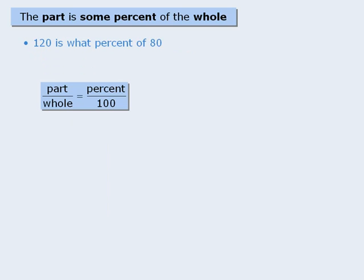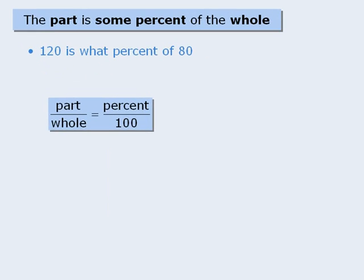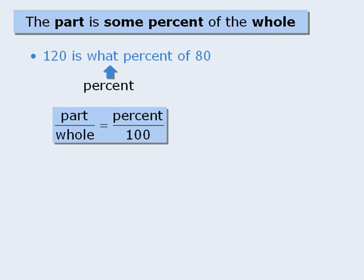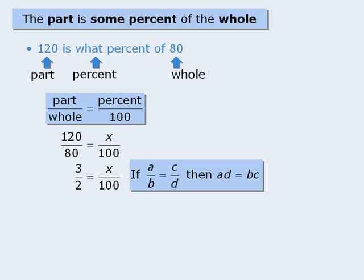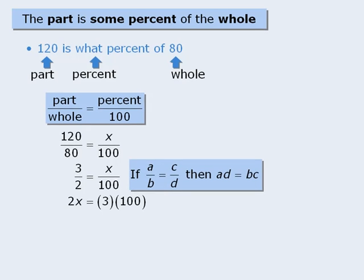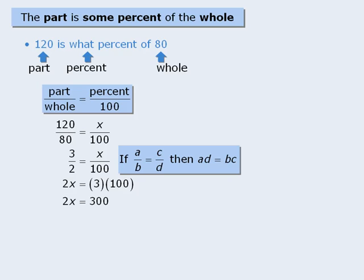One more. Here the percent is the unknown value, 80 is the whole, and 120 is the part. We plug these values into the formula and solve for x. First we simplify the left-hand side to get 3 over 2. Then we apply the rule and cross-multiply. From here we simplify the right-hand side and divide both sides by 2 to get x equals 150. So 120 is 150% of 80.